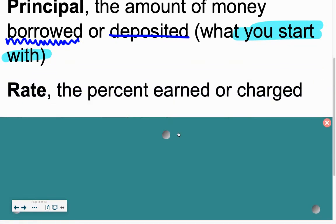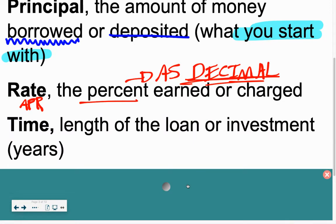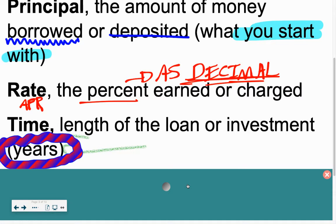Rate, our savings rate, our interest rate or APR, something you see a lot with credit cards, is a percent earned or charged. So that's the percent to figure out the interest, but it has to be used as a decimal. Like we've been using with the percent equation, it's got to be a decimal. Then we've got time, obviously the length that we're going to have the money in the bank, the length of the loan or the investment, but it has to be in years. I cannot stress that enough.